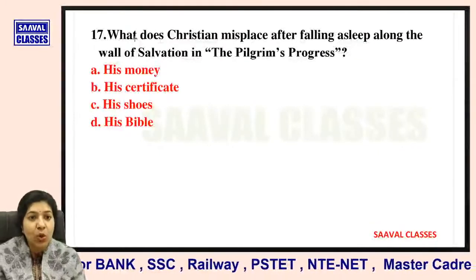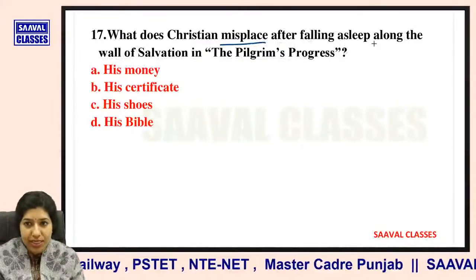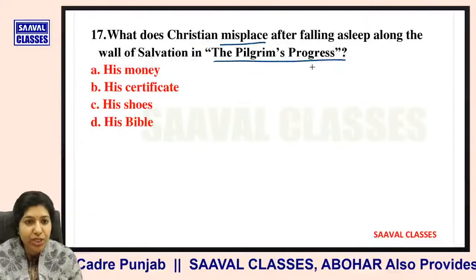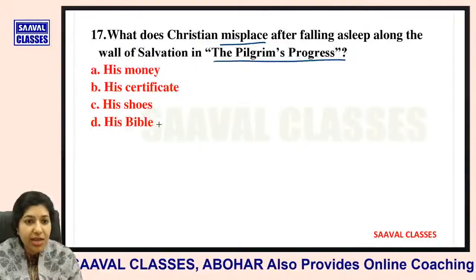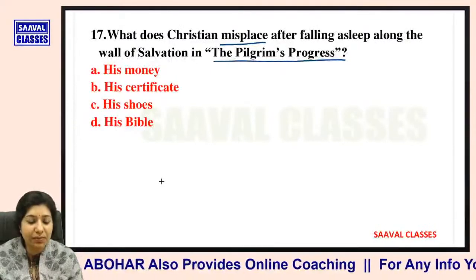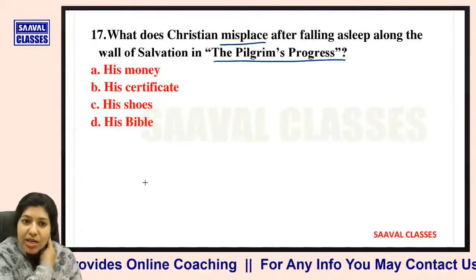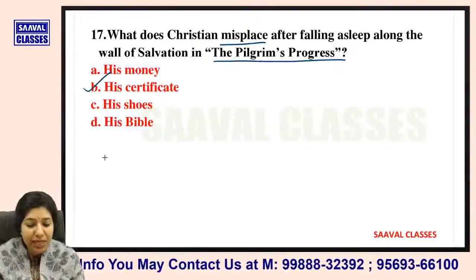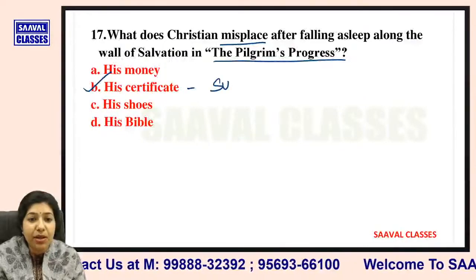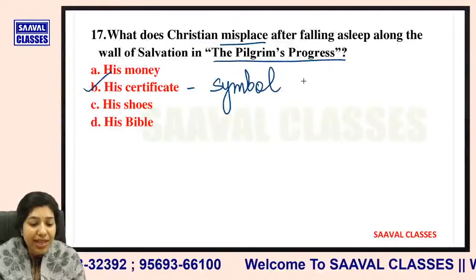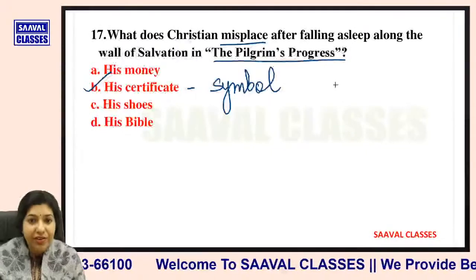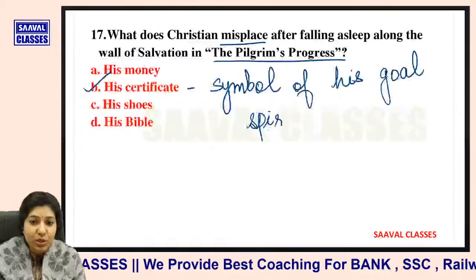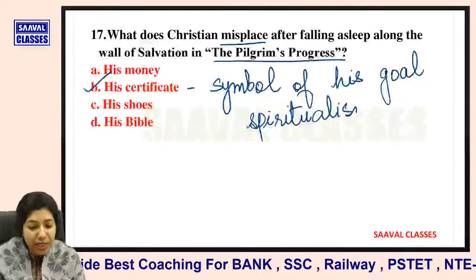Question number seventeen: What does Christian misplace after falling asleep along the wall of salvation in The Pilgrim's Progress? His money, his certificate, his shoes, or his Bible? He misplaces his certificate — the certificate that symbolizes his spirituality, the symbol that he has reached his destination and achieved the goal of spirituality.